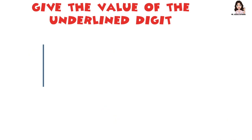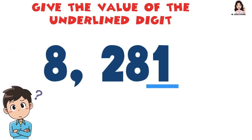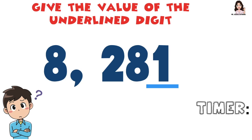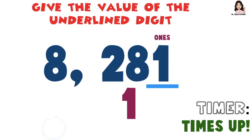How about if we have 8,281? What is the value of digit 1? Timer starts now! So what is the value of digit 1 at the ones place? Fantastic — 1!